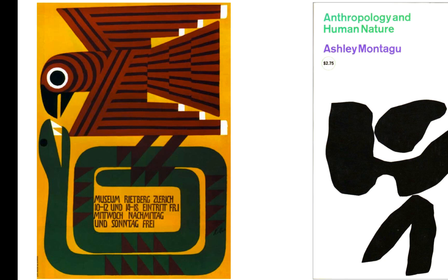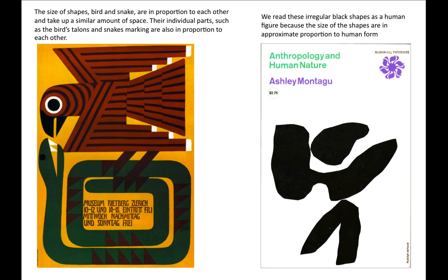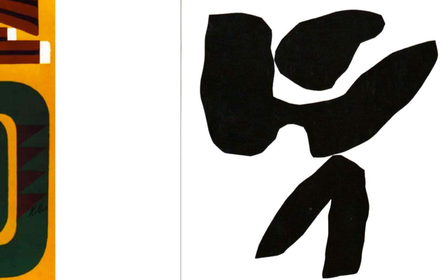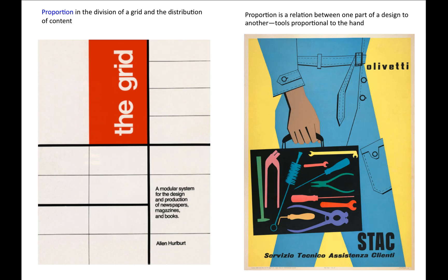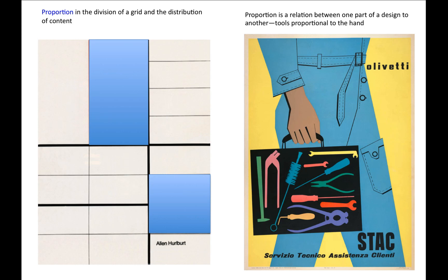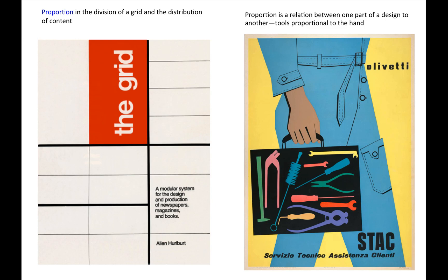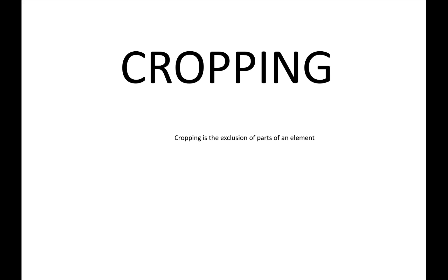The size of these shapes — the bird and snake — are in proportion to each other and take up similar amounts of space. Their individual parts, such as the bird's talons and snake markings, are also in proportion to each other. We read these irregular black shapes as a human figure because their size is in approximate proportion to the human form. Proportion also applies to the divisions of a grid and the distribution of content, as well as the relation of one design element to another — here the tools are proportional to the hand.